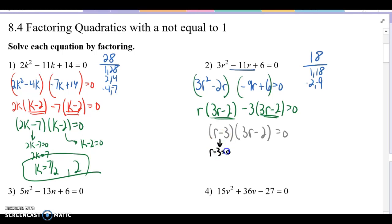R minus 3 equals 0. Add 3 to both sides. r equals 3. Next one, 3r minus 2 equals 0. Add 2 to both sides. Divide by 3. And we get r equals 2 over 3.